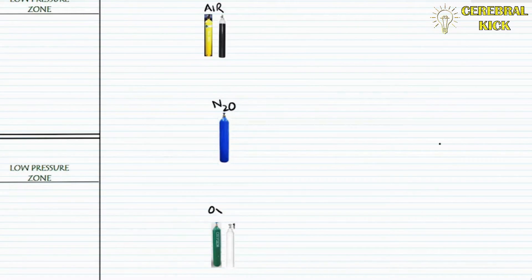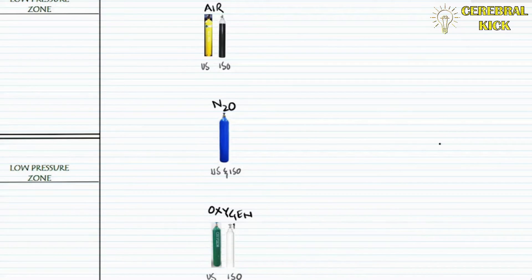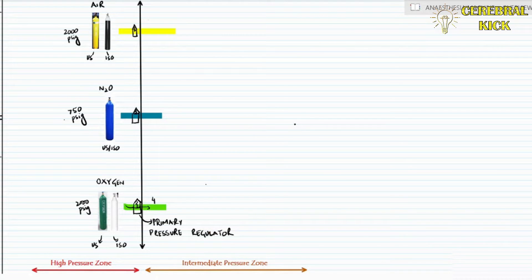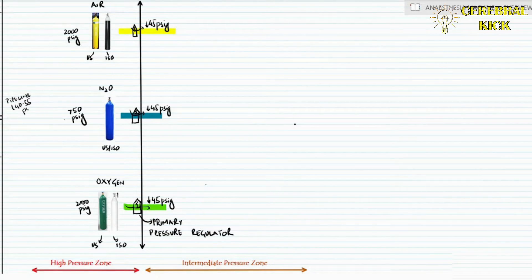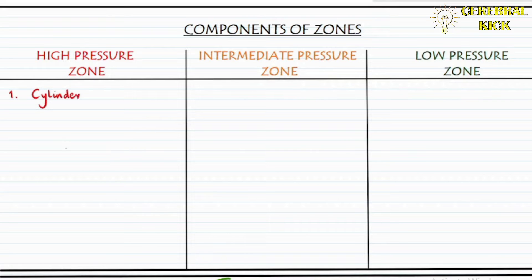Let us now start understanding the basic mapping of the anesthesia machine, starting with the high pressure zone which has the cylinders. Based on United States and international standards of color coding, oxygen and air carry 2000 PSIG at full cylinder, whereas nitrous oxide is at 750 PSIG. Right after these pressure lines enter the anesthesia machine, there is a primary pressure regulator which reduces the pressures from 2000 PSIG to 45 PSIG. Pipeline pressures are already in the 40 to 55 PSIG range, so they do not require any primary pressure regulator and directly fall into the intermediate pressure zone. The components of the high pressure zone are the cylinders and the primary pressure regulator, beyond which the intermediate zone starts.